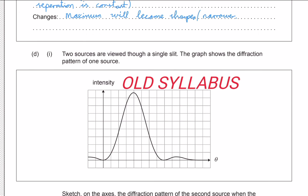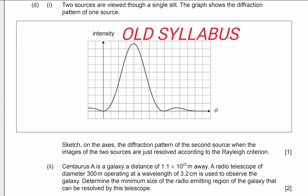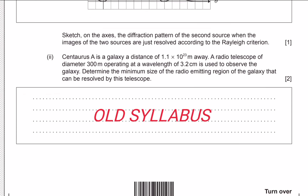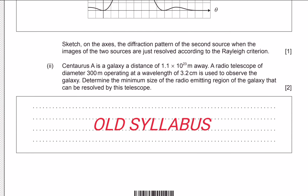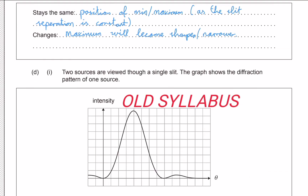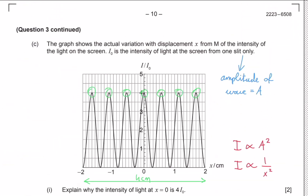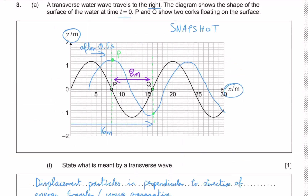The next question about the Rayleigh criterion and resolution has been removed from the IB syllabus, so those last two questions don't affect us anymore. This was the end of question 3 — I hope it was helpful, and see you in the next question.